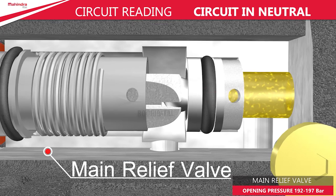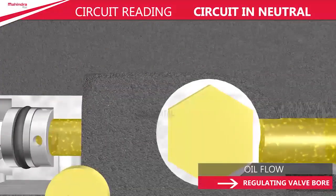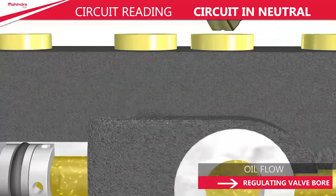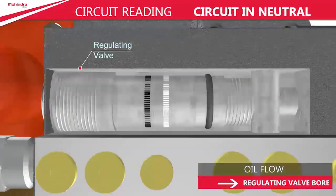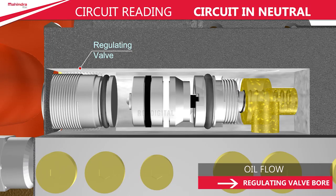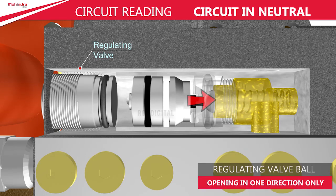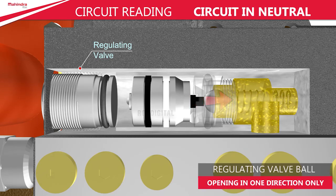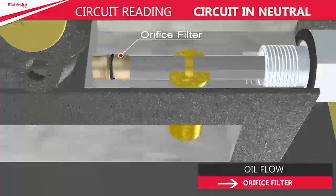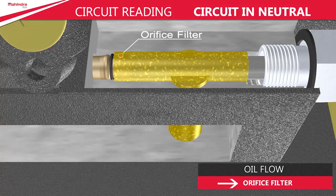As the present oil pressure will not open the main relief valve, the oil flows towards the regulating valve bore. The oil flowing towards the regulating valve comes in contact with the regulating valve ball, which opens only in one direction, so the oil finds another path.